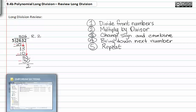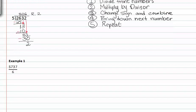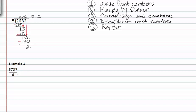So let's try an example. In this example we have 5737 divided by six. I'm going to rewrite it as a long division problem, and our divisor is six. Six won't go into five, but it will go into fifty-seven.